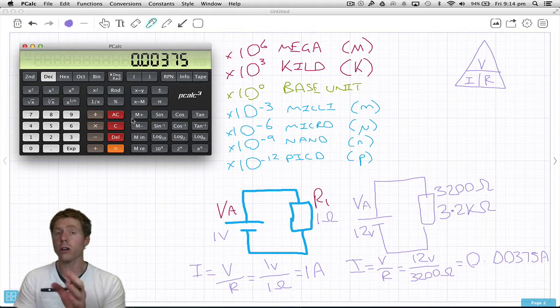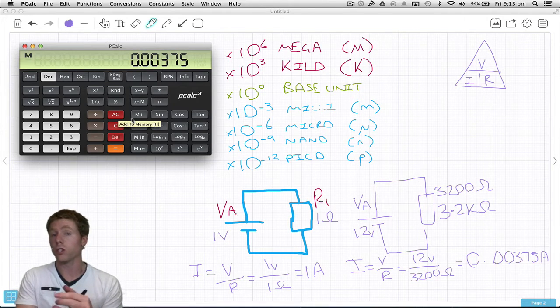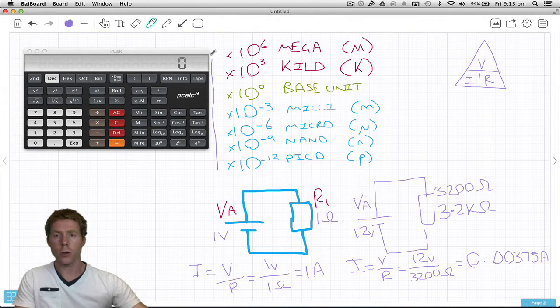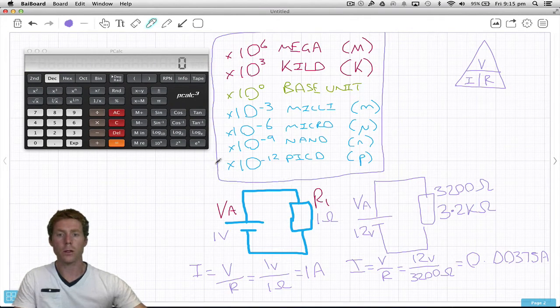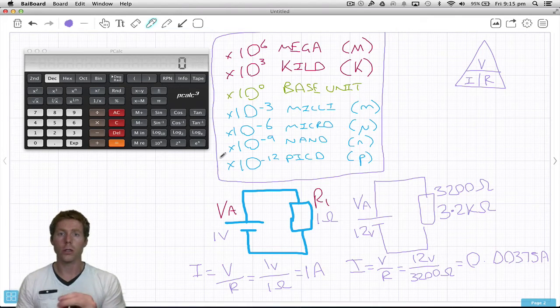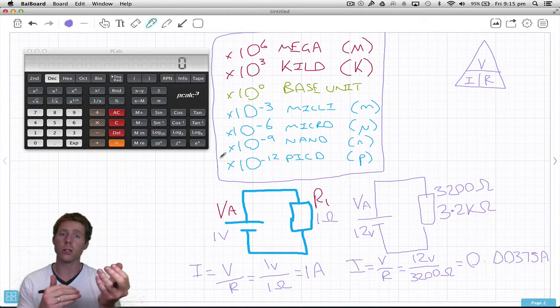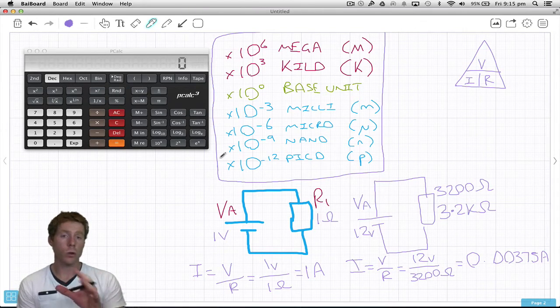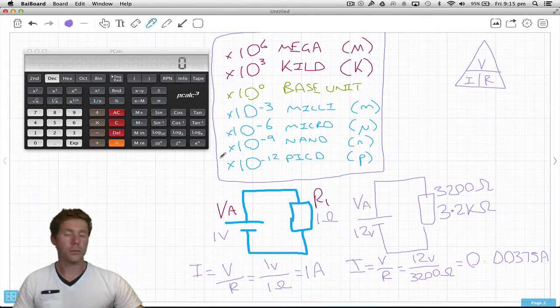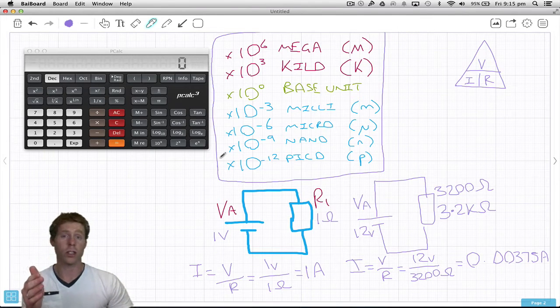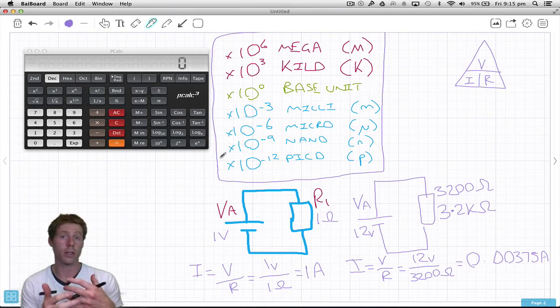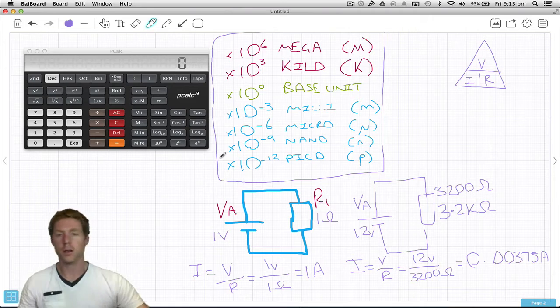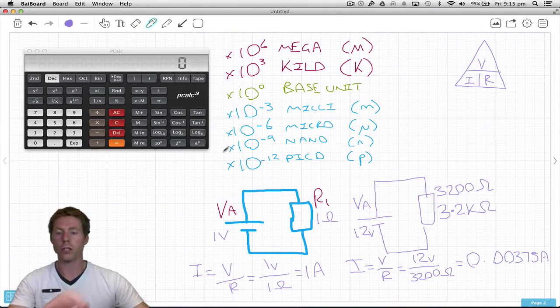On many calculators there's a button that says ENG for engineering notation. Engineering notation will format the answer so it fits into one of these: kilo, mega if above the base unit, or milli, micro, nano, pico if below. For all our lectures we won't be going outside any of these. You can get giga or below pico, but for now we'll deal with just these.